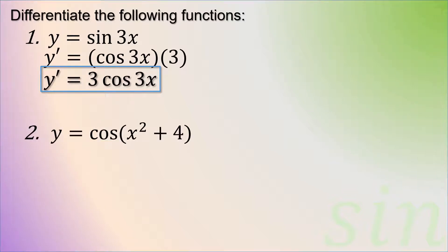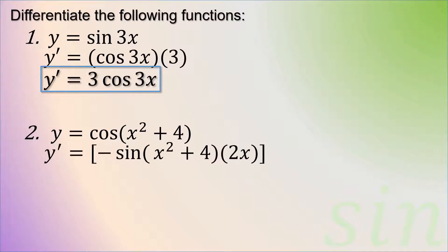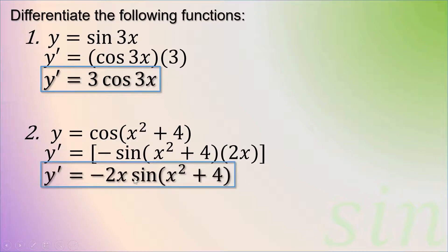Second example: y is equal to cosine of x squared plus 4. First, we derive the cosine — that gives negative sine times u, which is x squared plus 4. Then we derive u, giving 2x. So y prime is equal to negative 2x sine of x squared plus 4.